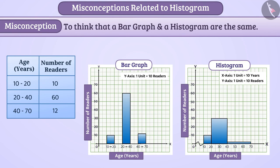For example, in this bar graph, all three age groups are taken as one category. Readers of different age groups can be compared. Like here, most readers are between 20 to 40 years of age.